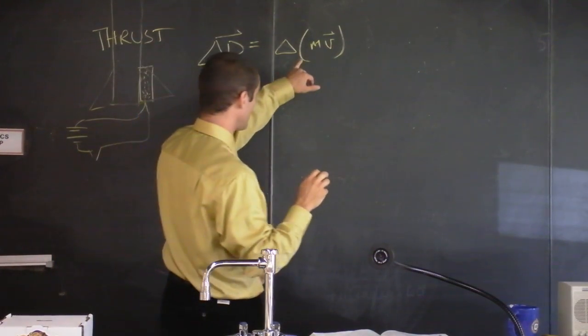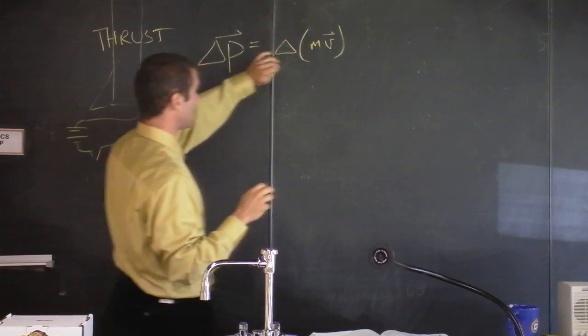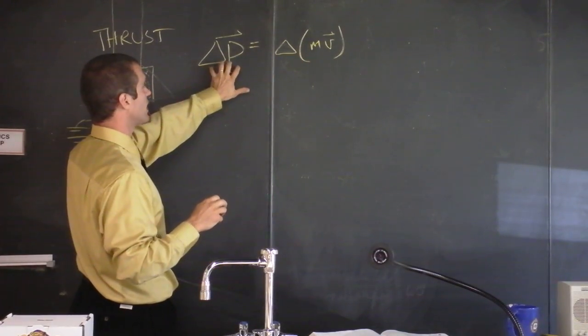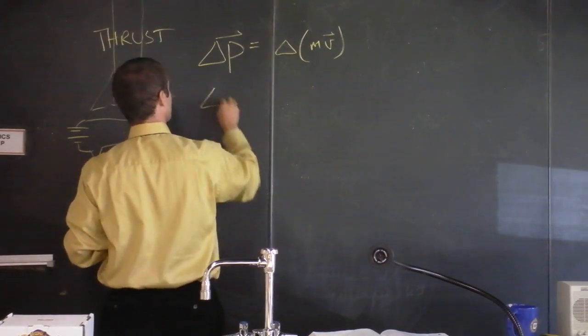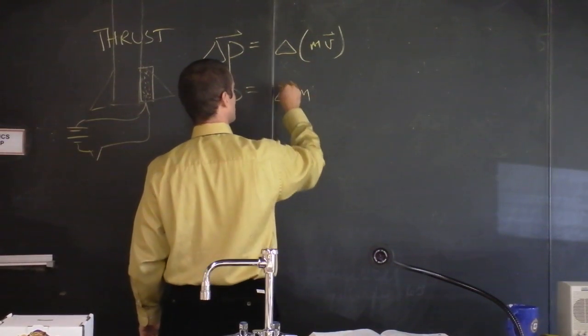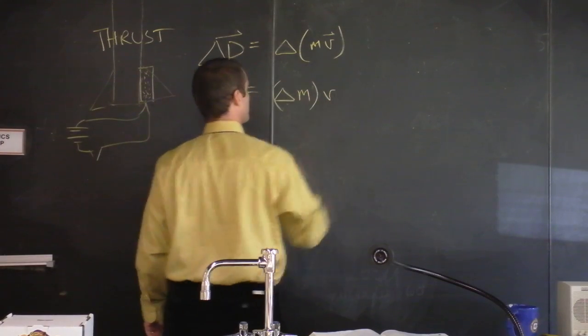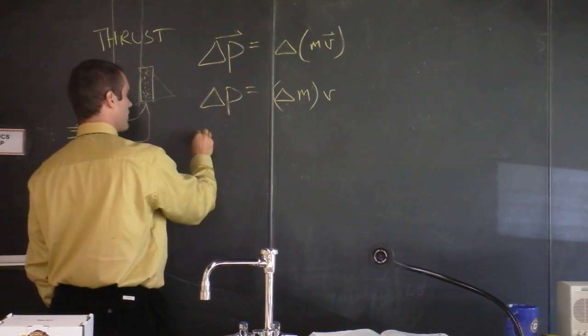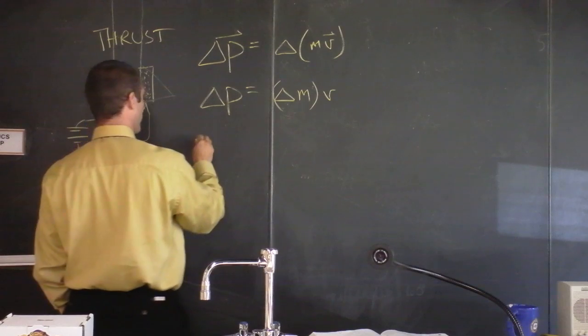So we could say that what's actually causing the biggest change in momentum is not the change in velocity, but the change in mass. We're going to say that it's change in mass times velocity. And you know the impulse momentum equation tells you that change in momentum is force times time.